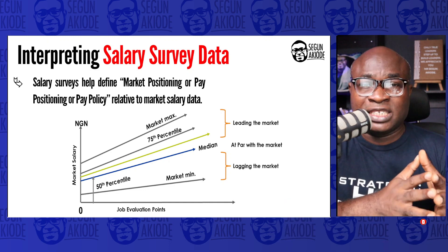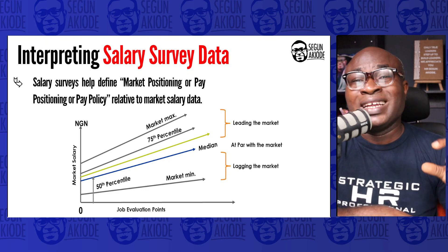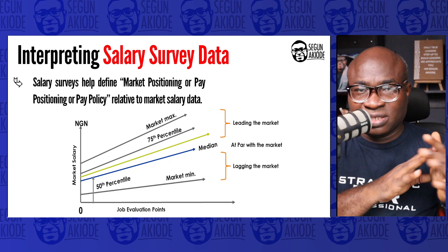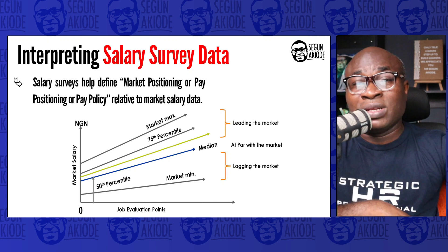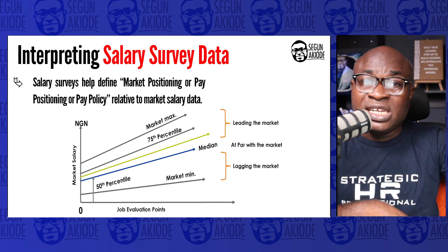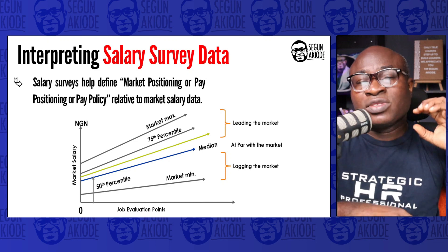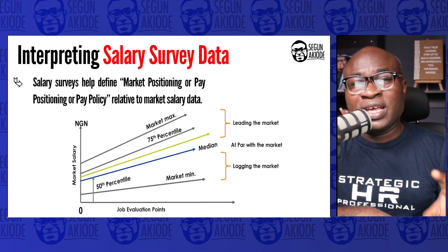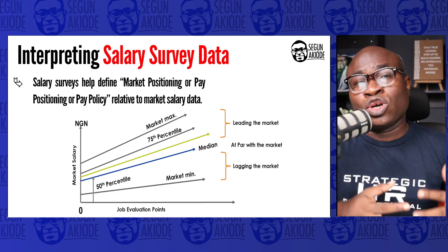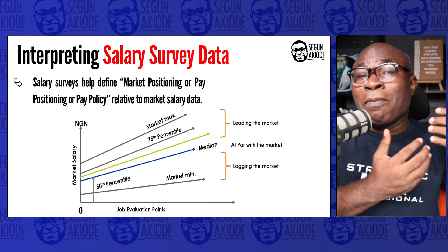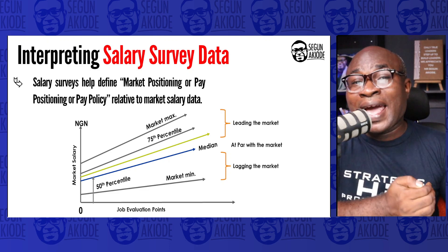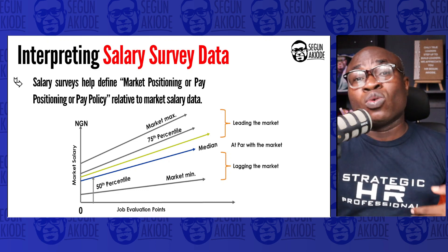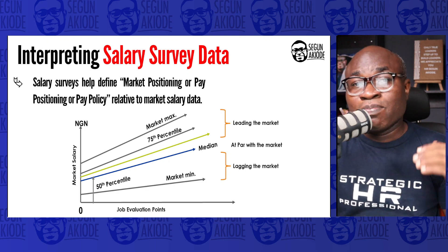For example, take a front-desk executive currently earning 50,000. If 50,000 is the market 50th percentile, an organization paying at that point is at par with the market. If an organization chooses to pay more — say 75,000 — that organization is leading the market for that pay level. Another organization that chooses to pay below 50,000 — say 35,000 — is lagging the market. By comparing their salary to the market 50th percentile, an organization can know where they currently play and adjust accordingly.